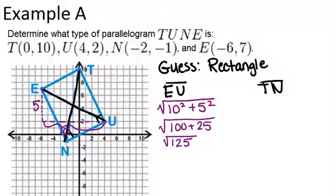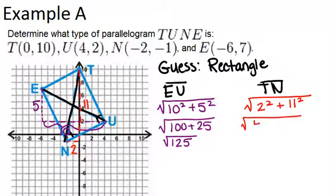For TN, we're going to do the same thing to figure out the length. So we want to figure out the change in the y-coordinates and the change in the x-coordinates. So the change in the x-coordinates is 2, and the change in the y-coordinates is 11. So that means the length of TN is 2 squared plus 11 squared, and then you square root all of that. So that's the square root of 4 plus 121, which is the square root of 125.